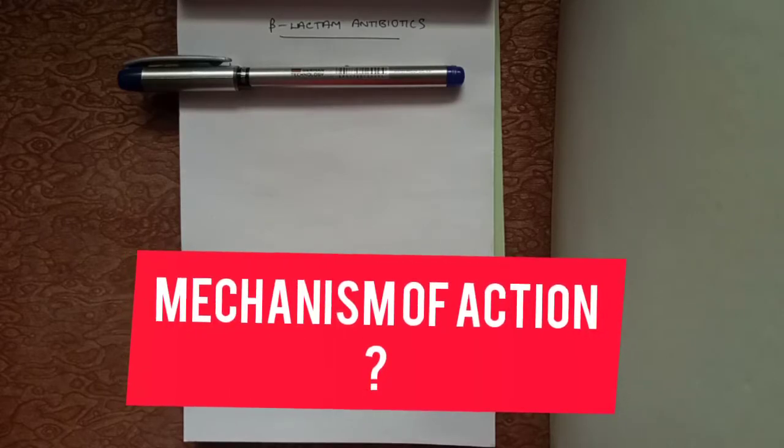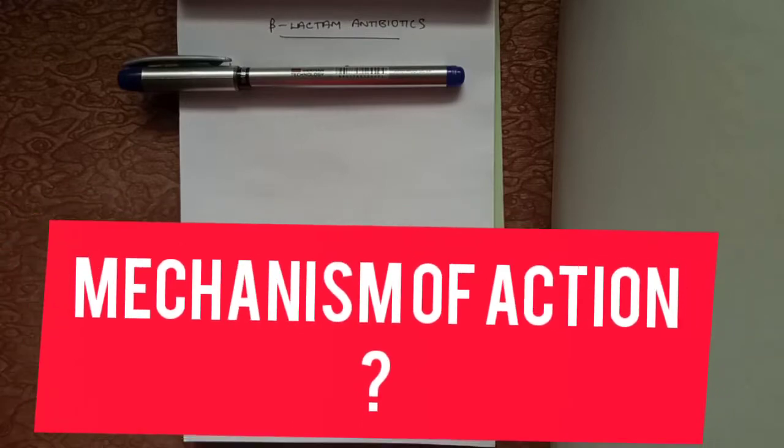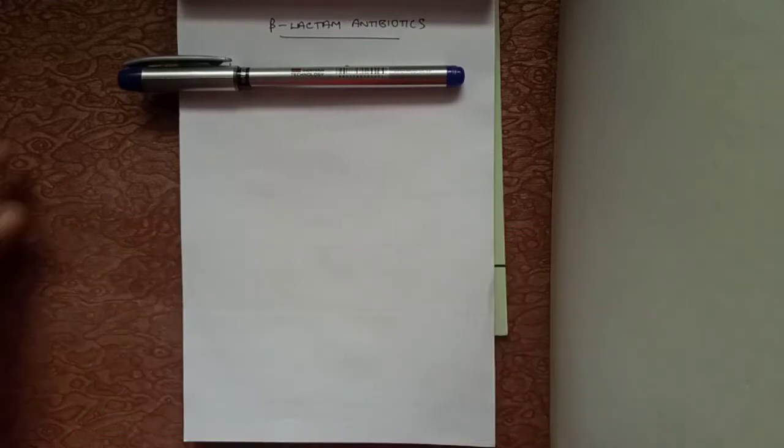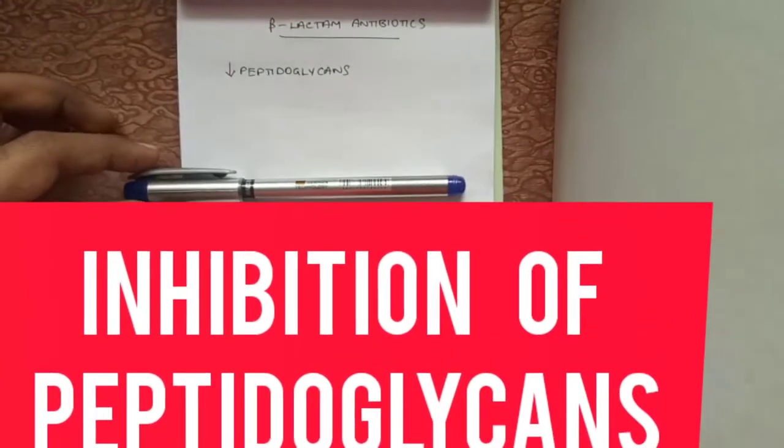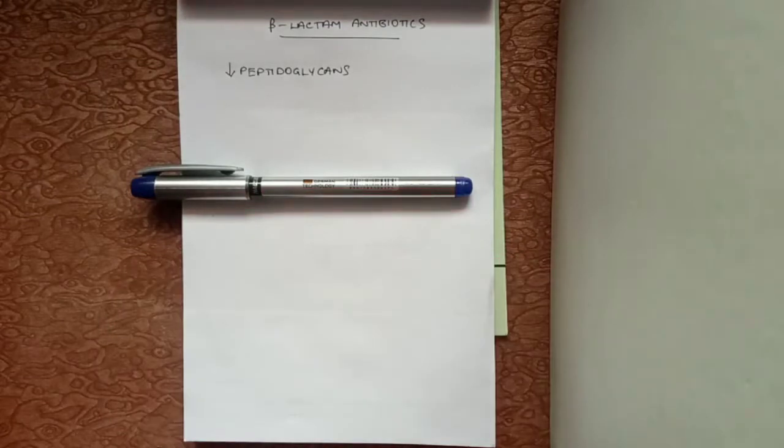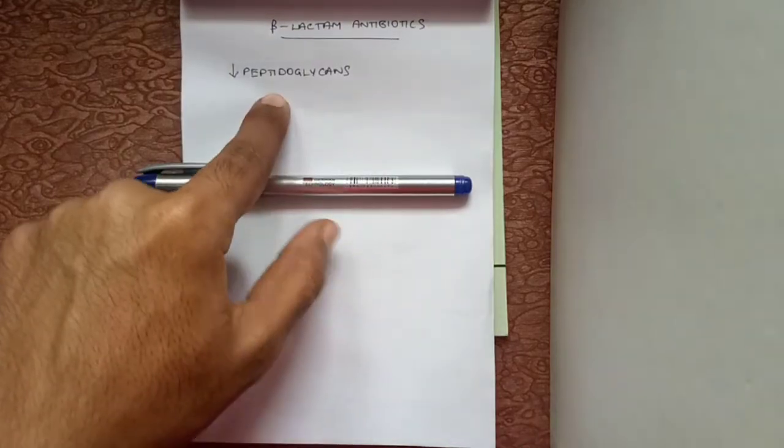Let's see the mechanism of action of beta-lactam antibiotics. The main mechanism is inhibition of peptidoglycans. Peptidoglycans are a constituent of the cell wall of bacteria. Now let's see how beta-lactam antibiotics inhibit peptidoglycans.